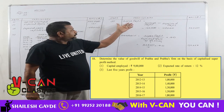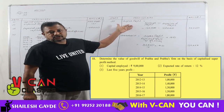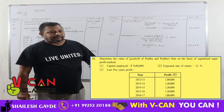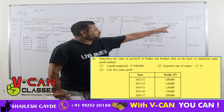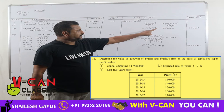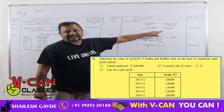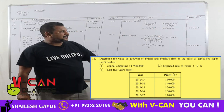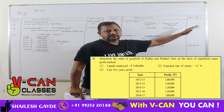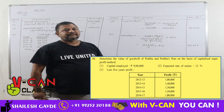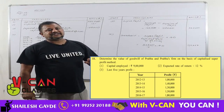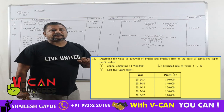Step 5: we calculate super profit. Super profit equals average profit minus expected profit — that is 1 lakh 40,000 minus 1 lakh 8,000 — so super profit is 32,000. Now, under capitalization of super profits, we move to the final step.